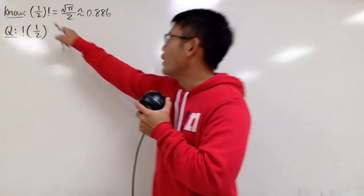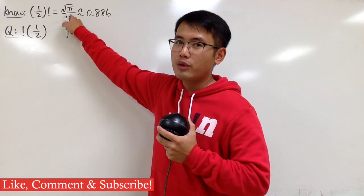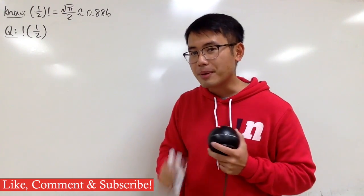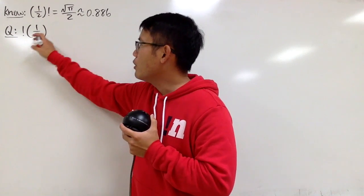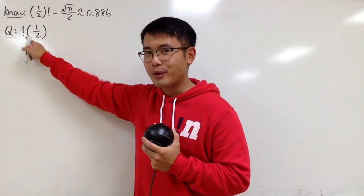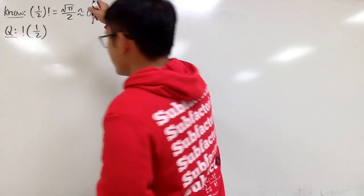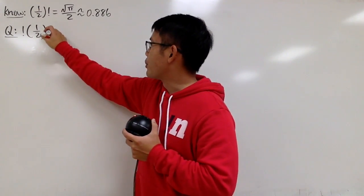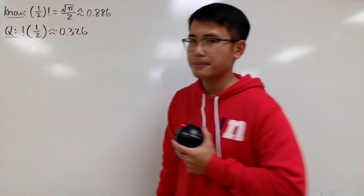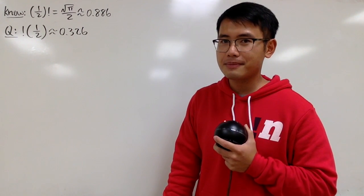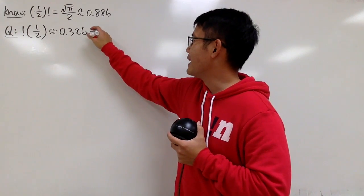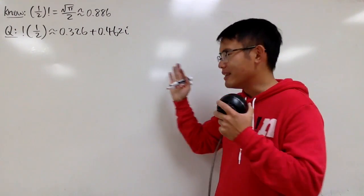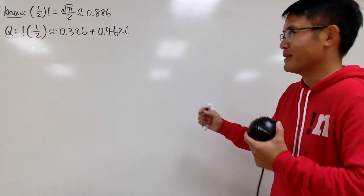As we all know, when we have (1/2)!, this is √π/2, which is about 0.886. But have you ever thought about what is the sub-factorial of 1/2? Yes, we have the factorial in the front now — let's call the sub-factorial like this. And the answer is approximately equal to 0.326 plus 0.462i. Yes, all of a sudden, imaginary numbers came out.